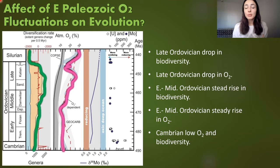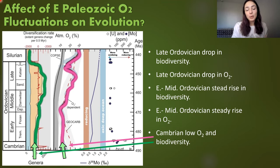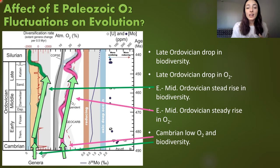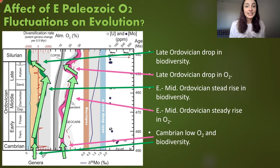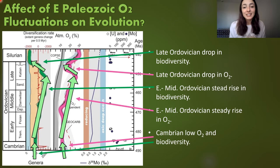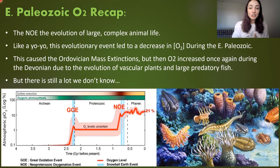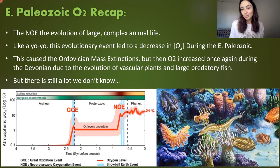To recap biodiversification history alongside oxygenation history: the Cambrian had low oxygen and low biodiversity; the Ordovician saw a rise in both oxygen and biodiversity; then the late Ordovician experienced a drop in oxygen causing the major Ordovician mass extinctions. Through the Silurian things remained relatively steady, and then during the Devonian the major diversification of vascular plants led to the DOE. We'll likely have another video on mid-to-late Paleozoic oxygen history, including the Carboniferous period, which was named after major carbon burial events.